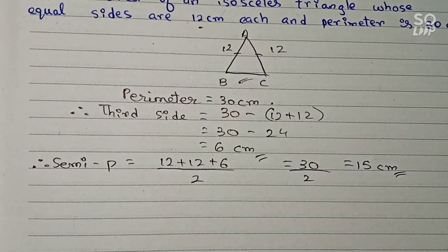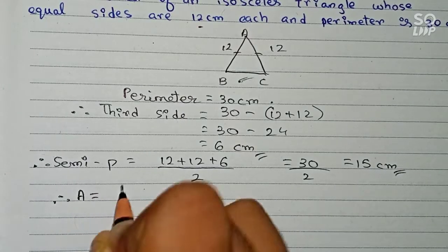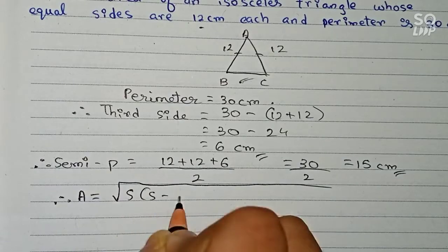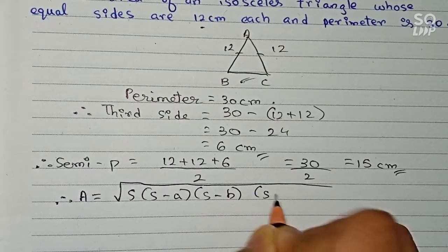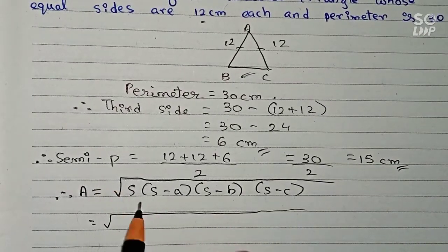So now using Heron's formula you can easily find out the area. So therefore area will be equals square root of s times (s minus a) times (s minus b) times (s minus c).